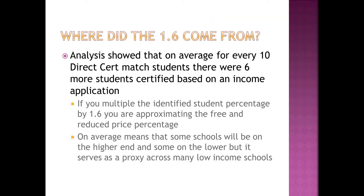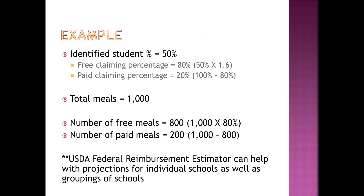Where did that 1.6 factor come from? Analysis shows that on average, for every 10 direct certification matched students, there were 6 more students certified based on an income application. So multiplying the identified student percentage by 1.6 approximates the free and reduced percentage. The average means that some schools will be on the higher end and some on the lower end — it serves as a proxy across many low-income schools based on historical data.